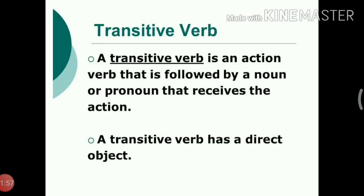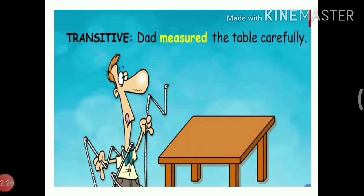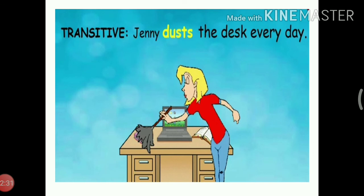Number 5: Transitive verb. A transitive verb is an action verb that is followed by a noun or pronoun that receives the action. A transitive verb has a direct object. Let us see some examples: I ate my lunch quickly. Dad measured the table carefully. Jenny dusts the desk every day.